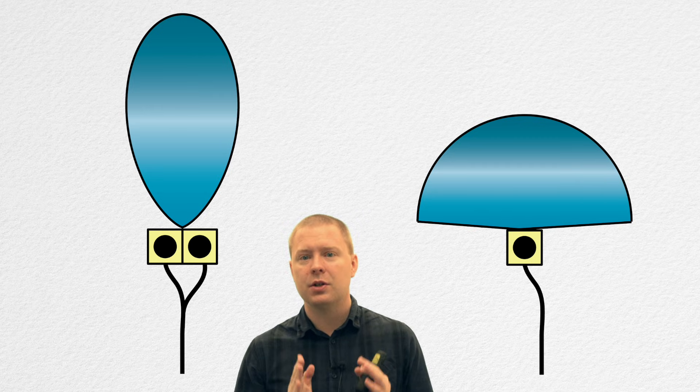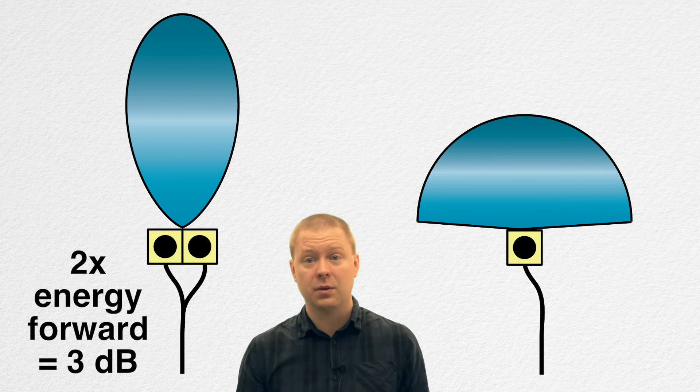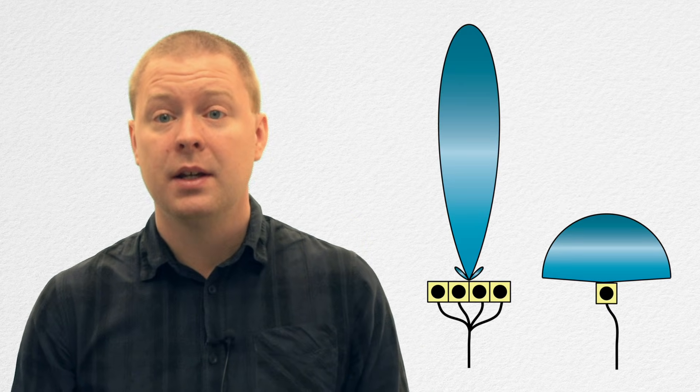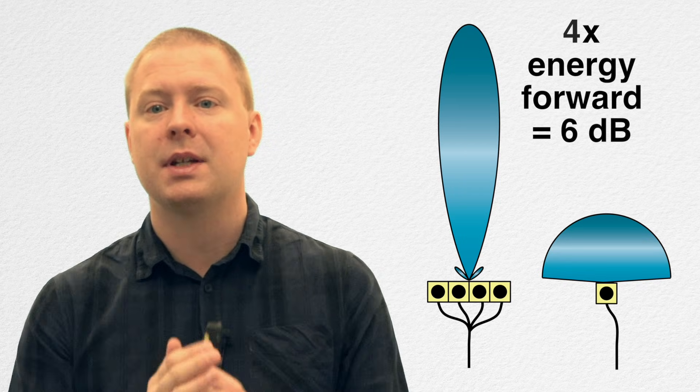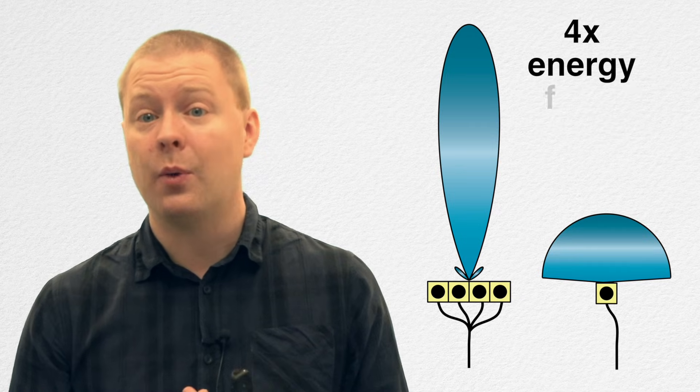With two radiating elements you get twice the energy going forward and less energy going in other directions. We're using the same amount of energy still, and these two times we call it three decibels. Similarly, if you have four radiating elements and feed them with the same signal, you still have one antenna, but you get four times the amount of energy going forward. We call it six decibels of array gain.